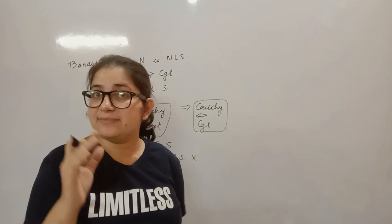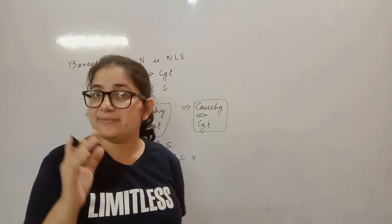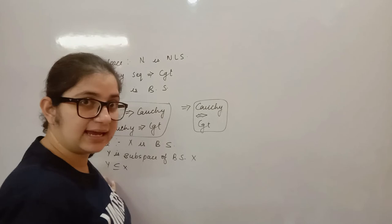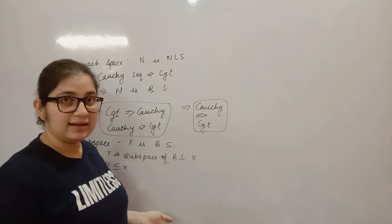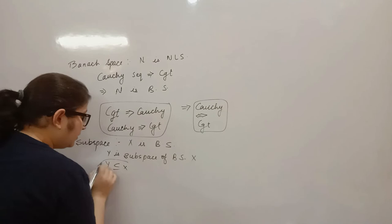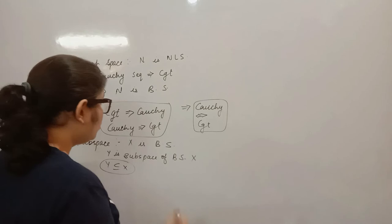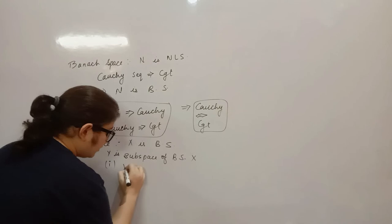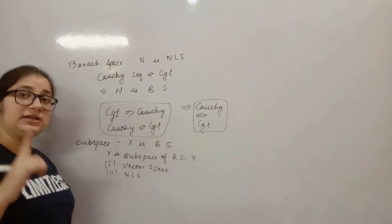The subspace means a subset, so where will the elements come from? They will come from x. The elements of x have already satisfied the normed linear space axioms. The elements of y come from x, so y will also be a normed linear space. You do not need to check those axioms again. So, a subspace will be a normed linear space, with the norm on x restricted to y.